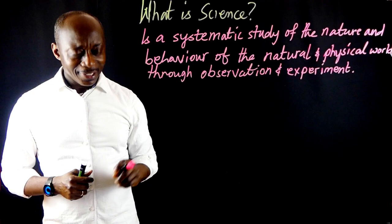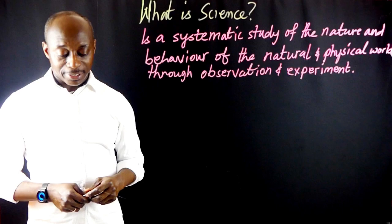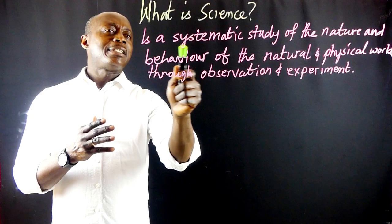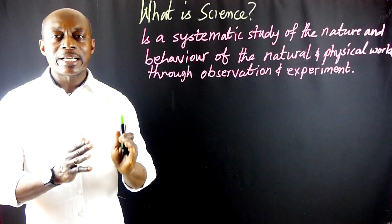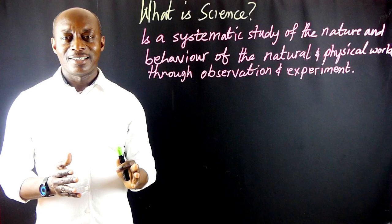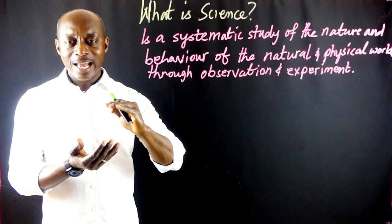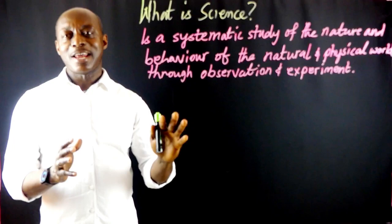Now let us explain a little bit further. When we say something is systematic, it means it follows a logical and sequential order — it is not done haphazardly. You start from one, two, three, in that kind of organized order. It is not done anyhow. That is what we mean by systematic.